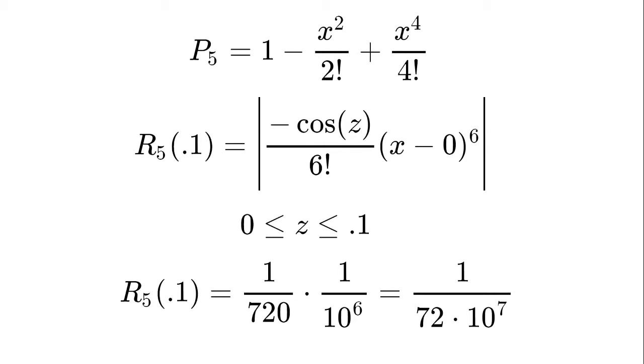And so that is going to be 1/720, which is 6 factorial, and that is times 1/10⁶, since we took 0.1 and we plugged it in for (0.1-0) to the sixth power. That also got rid of the negative since this is the absolute value. So the final answer is going to be 1/(72·10⁷), which is the maximum error bound for solving for 0.1 when put into the Maclaurin polynomial for cos(x).